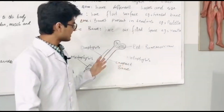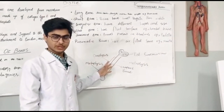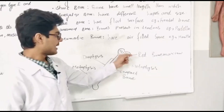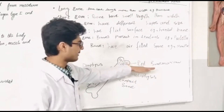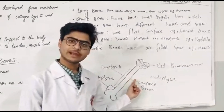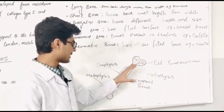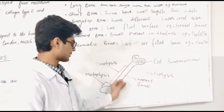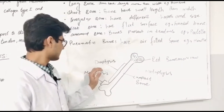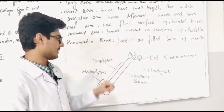This is a figure of bone. This part is the red bone marrow. This is the metaphysis, and this part is compact bone, then the diaphysis. Thank you.